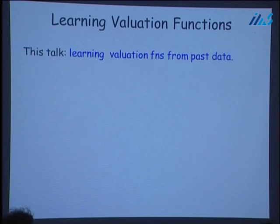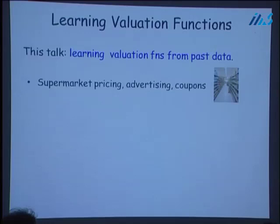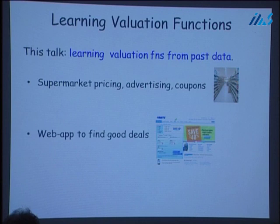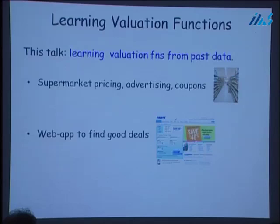This is an important problem motivated by various applications. It is very common for supermarket chains today to keep track of purchases of customers, for instance by using a loyalty card. Given access to this data, it would be very useful to learn the valuation function of a customer or a typical customer in order to target advertisement or coupons better and ultimately achieve better pricing. Similarly, companies like Orbitz or Expedia could hope to learn the valuation function of a typical customer to make better recommendations and obtain better profit.